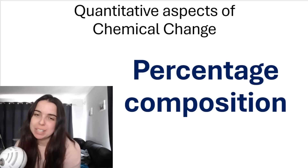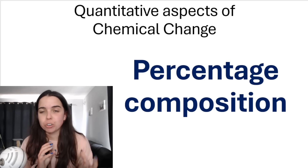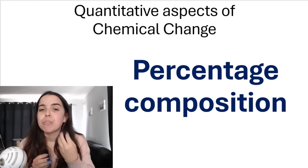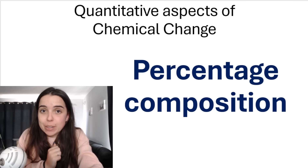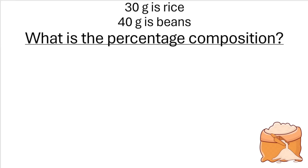Before we speak about percentage composition in terms of stoichiometry, I want to explain in easy terms what it means when I ask for the percentage composition of something. If I give you a bag and say 30 grams of the bag is rice and 40 grams is beans — 30 grams of what fills the bag is rice, 40 grams is beans — what is the percentage composition of the substances filling up the bag?